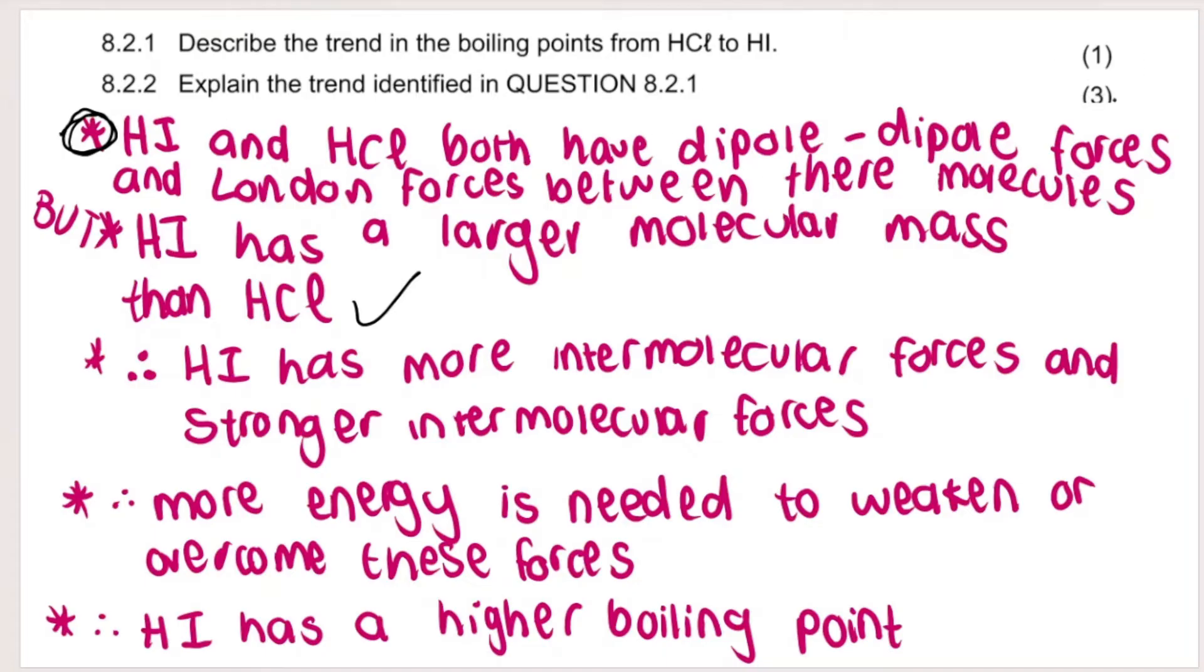So I always start off by stating the intermolecular forces present between the molecules of both. You could say molecules of HI and molecules of HCl both have dipole-dipole forces and London forces between their molecules. In this particular test, they didn't award a mark for that. But in matric, if this question is worth four or five marks, then they do require you to first state the intermolecular forces. Then say, even though they have the same intermolecular forces, HI has a larger molecular mass. Because of that, it has stronger intermolecular forces. So that's your second mark.